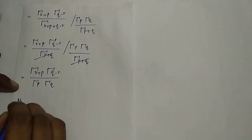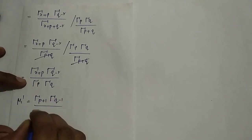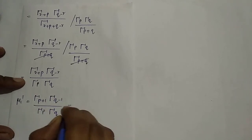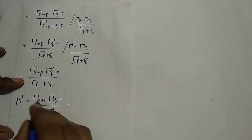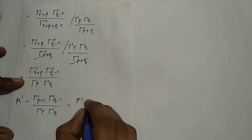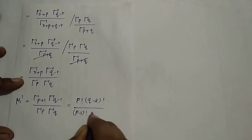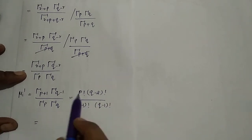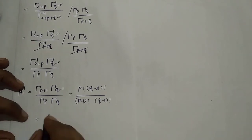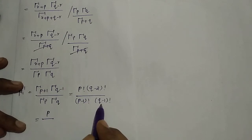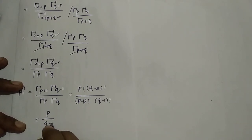For μ'₁ (the mean), put r = 1 in the formula: μ'₁ = Γ(p+1)·Γ(q-1) / [Γ(p)·Γ(q)] = p!·(q-2)! / [(p-1)!·(q-1)!] = p/(q-1). This is the mean of the beta distribution of the second kind.